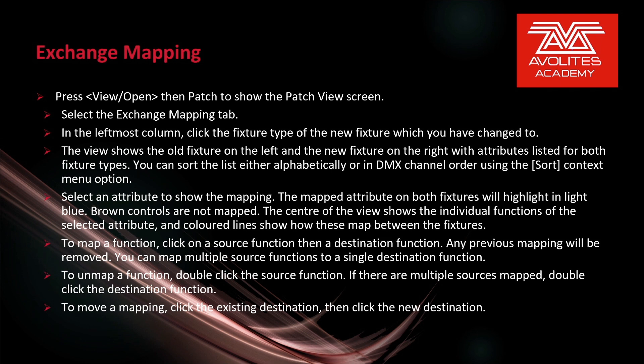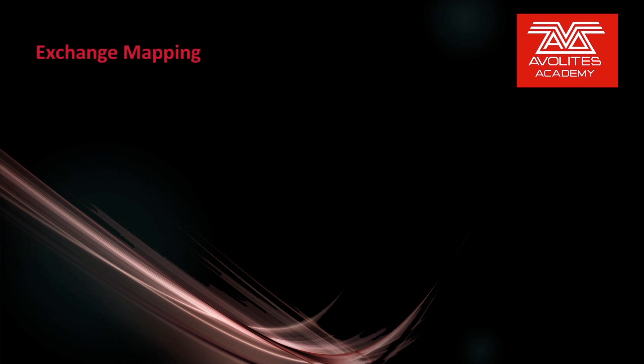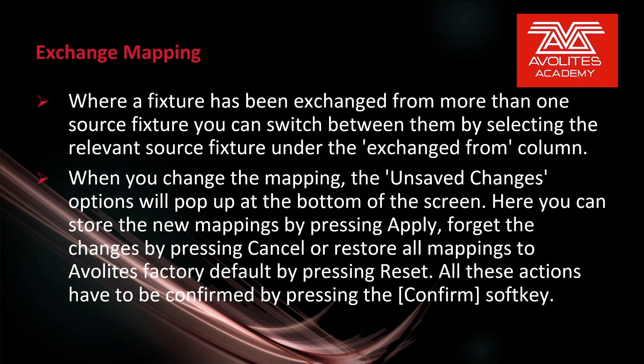To move a mapping, click the existing destination, then click the new destination. Where a fixture has been exchanged from more than one source fixture, you can switch between them by selecting the relevant Source fixture under the Exchange From column. When you change the mapping, the Unsaved Changes option will pop up at the bottom of the screen. Here you can store the new mappings by pressing Apply, forget the changes by pressing Cancel, or restore all mappings to the Avolites factory default by pressing Reset. All actions have to be confirmed by pressing Confirm on the soft key.